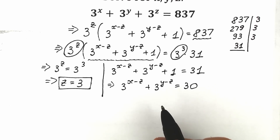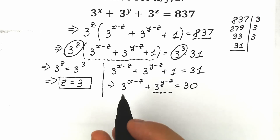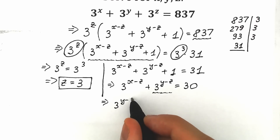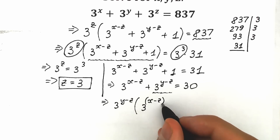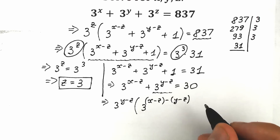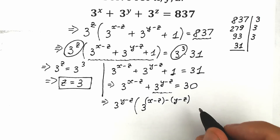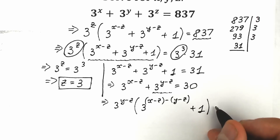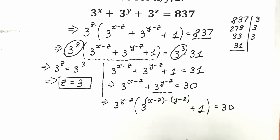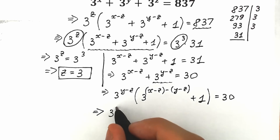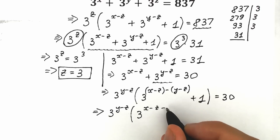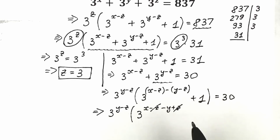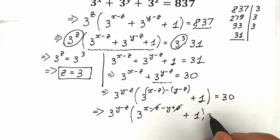Now let's factor 3 to the power y minus z from this expression. As a result we have: 3 to the power y minus z, times the quantity 3 to the power (x minus z minus (y minus z)), plus 1, equal to 30. Simplifying inside the parentheses, the minus z and plus z cancel, giving us: 3 to the power y minus z, times (3 to the power x minus y, plus 1), equal to 30.